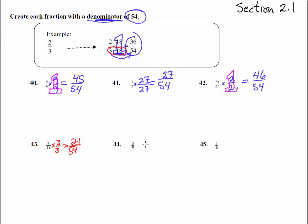Now the next one, five-ninths. We've got to times it by something and it's going to equal with a 54 on the bottom. 9 times, oh we did that one right here, 6 times 9 is 54. So this has got to be a 6 and a 6, 5 times 6 is 30.